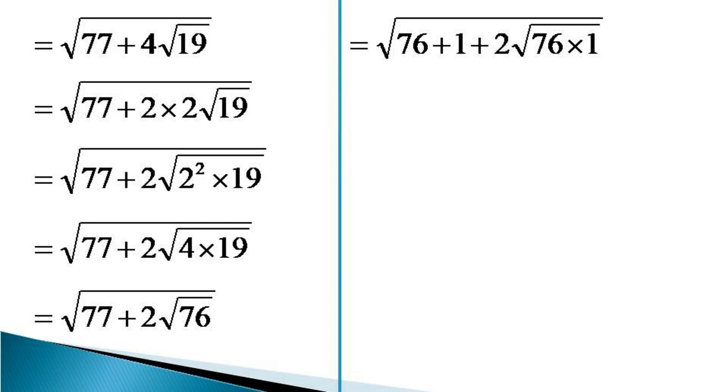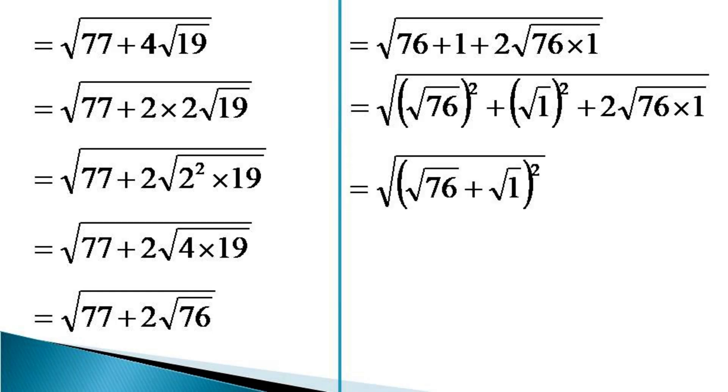Then we express this term as equal to √(76 + 1 + 2√(76 × 1)). This can be expressed as equal to √((√76)² + 2√76 × 1). This is the full square of the summation of √76 + √1 and it becomes equal to √((√76 + √1)²).